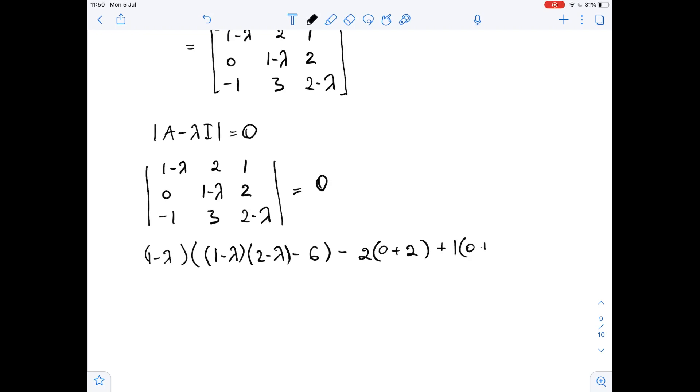Let's simplify it. We get 1 minus lambda times 2 minus lambda minus 2 lambda, plus lambda squared minus 6, minus 4 plus 1 minus lambda equals 0